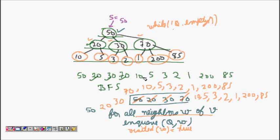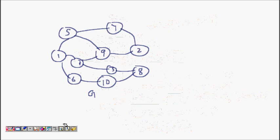A common interview question is: given a tree, how will you print it level by level? The direct answer is: do a breadth first search. Now let's move quickly to a more complex example — a graph — and perform breadth first search on it.